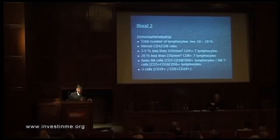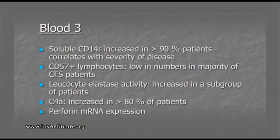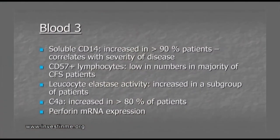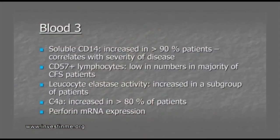What is striking is that more than 90% of our patients have increased soluble CD14, and soluble CD14 codes for LPS in the serum. I presented data two years ago here on Norwegian patients with high LPS in their serum. More than 90% of patients have high CD14, some with three to five times normal values. This shows that there is abnormal translocation of bacteria from the gut to the blood. The majority of patients also have low CD57-positive lymphocytes, which is also a defect in immunity.